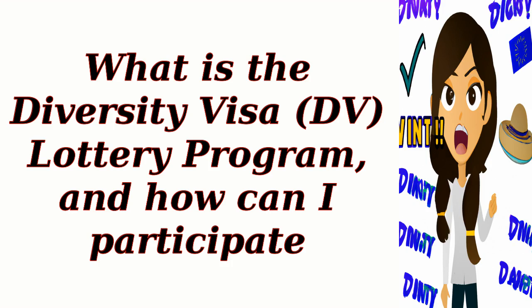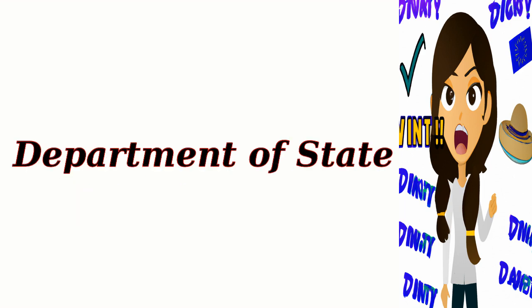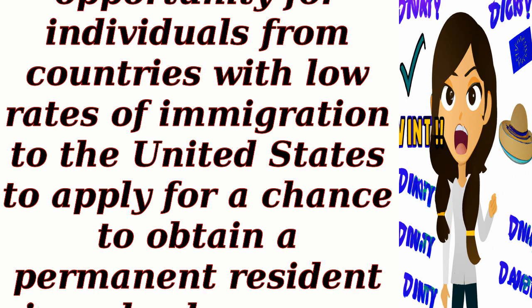What is the Diversity Visa (DV) lottery program and how can I participate? The Diversity Visa (DV) lottery program, also known as the Green Card Lottery, is a program administered by the U.S. Department of State. It provides an opportunity for individuals from countries with low rates of immigration to the United States to apply for a chance to obtain a permanent resident visa, also known as a Green Card.